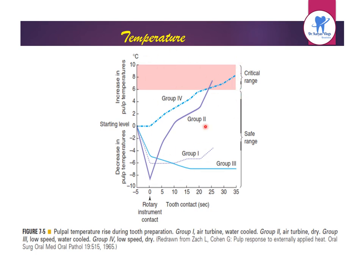The dry groups — Groups 2 and 4 — show the critical range of temperature rise. The most critical is Group 4, low speed dry. All water-cooled groups show the safe range.